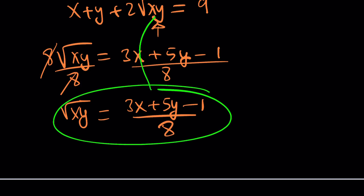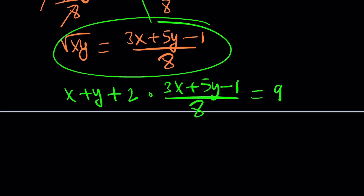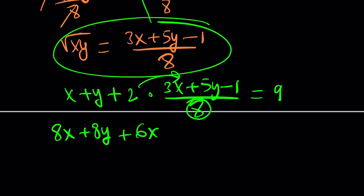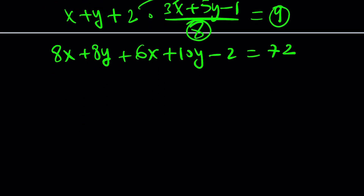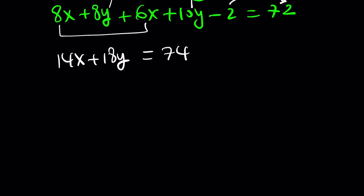Now we plug this expression back into the equation x plus y plus 2 times sqrt(xy) equals 9. Multiplying everything by 8 gives 8x plus 8y plus 2 times (3x + 5y − 1) equals 72. Distributing and combining like terms: 8x + 8x and 8y + 10y gives 14x plus 18y, and adding 2 to both sides gives 74. Dividing by 2 yields 7x plus 9y equals 37.